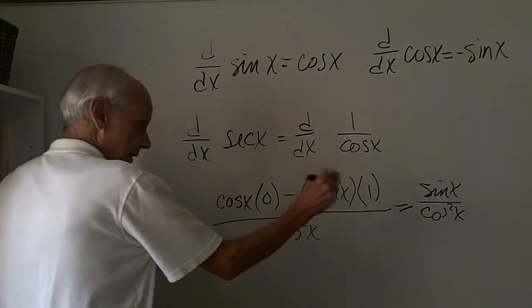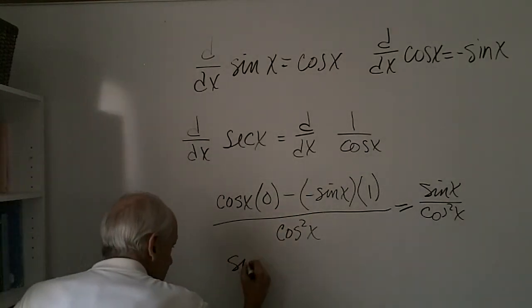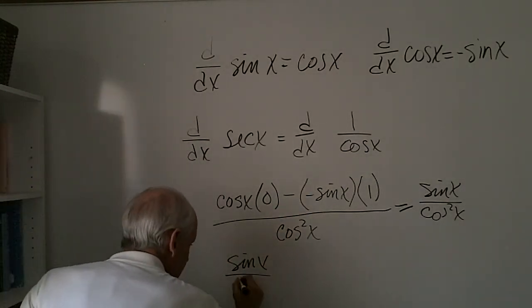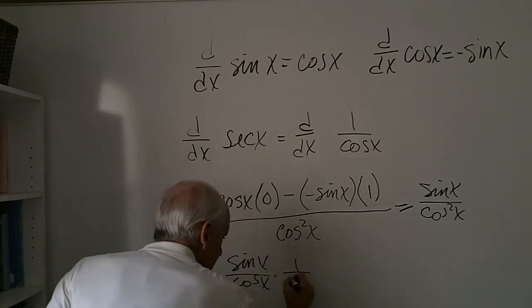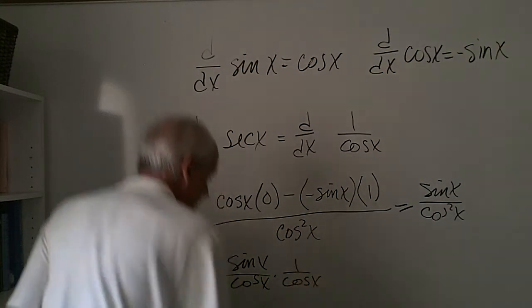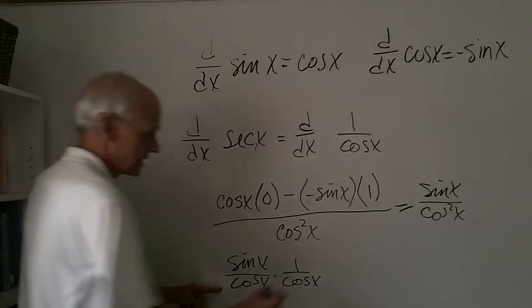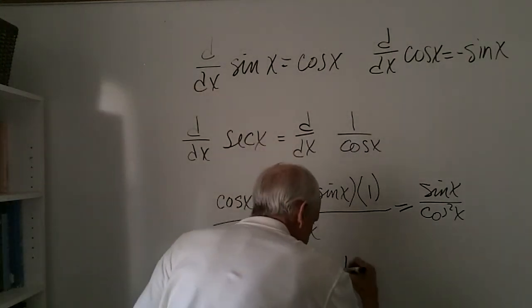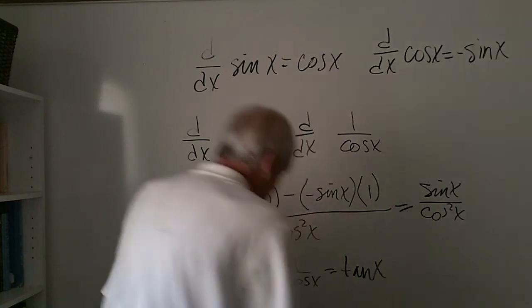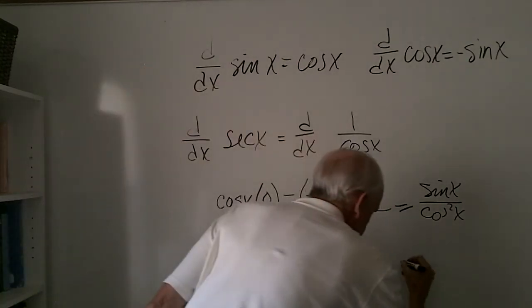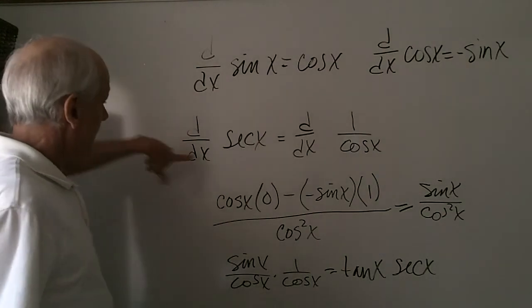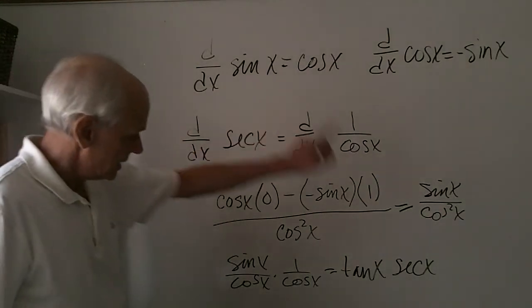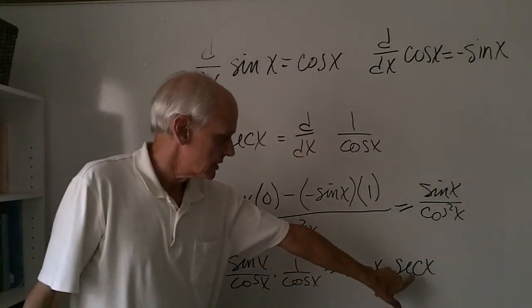and that is equal to sine x over cosine x times 1 over cosine x. Well, sine over cosine is simply tangent x, and 1 over cosine is secant x. So the derivative of secant x is equal to tangent x times secant x.